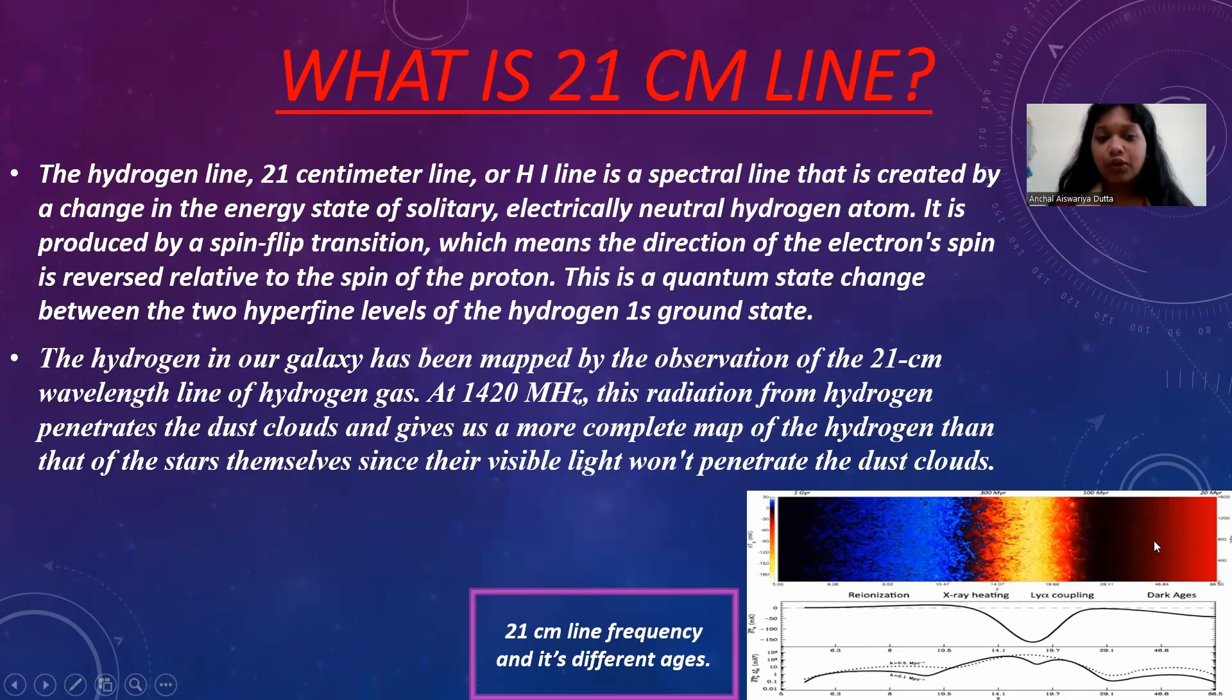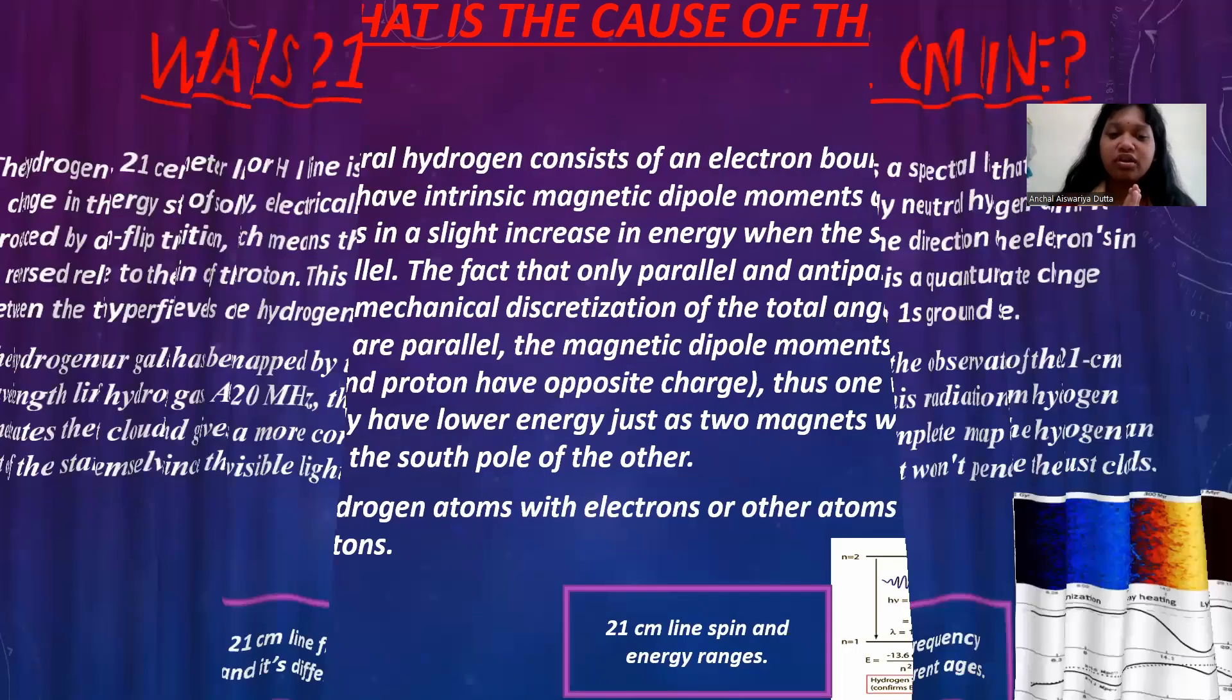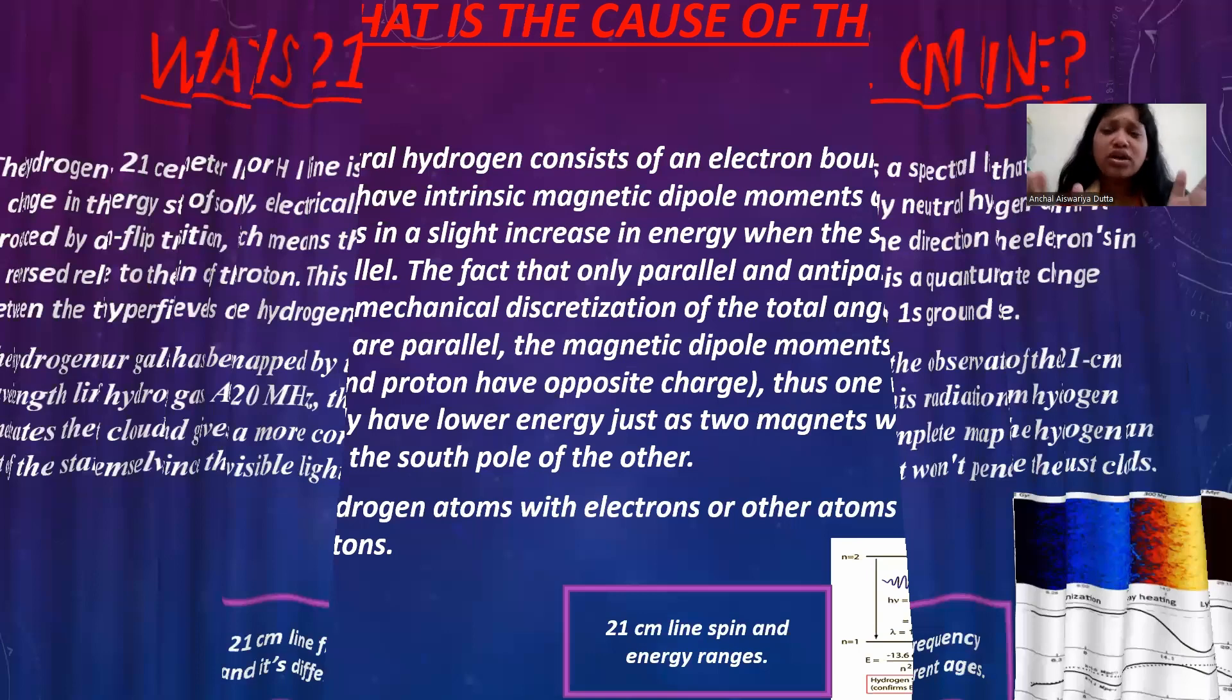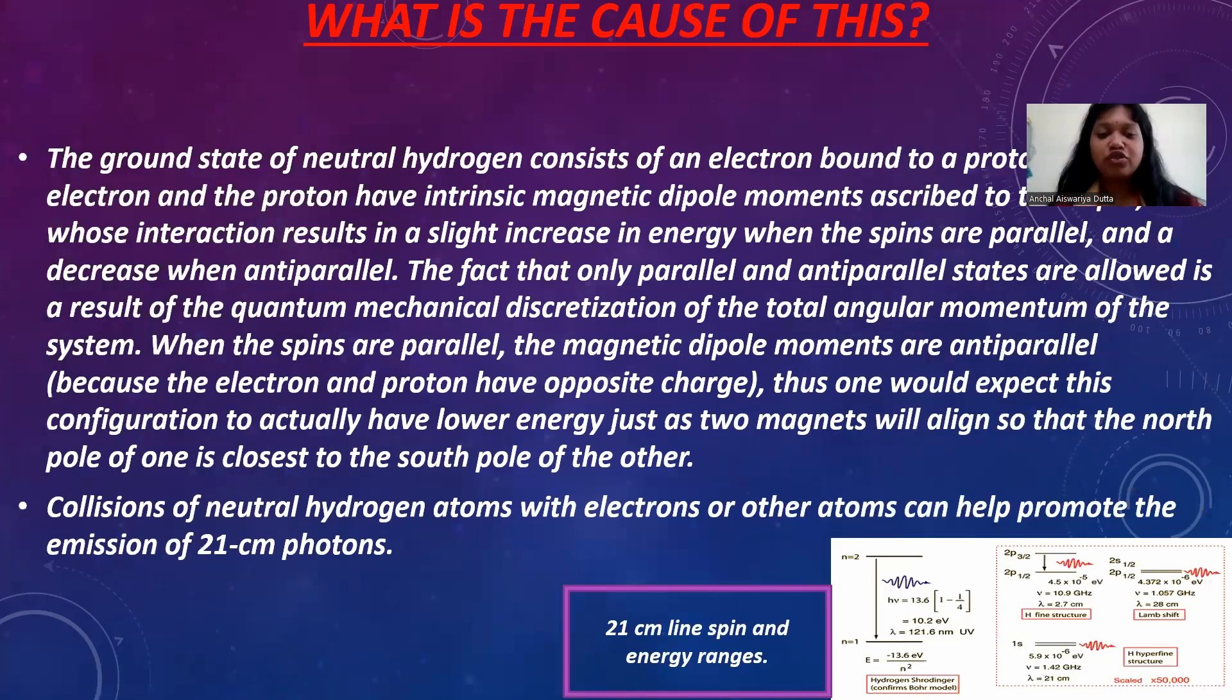Now, again, another important question will come to your mind: what is the cause of it? Well, it actually arises from a quantum mechanical phenomena involving the spin of an electron in a hydrogen atom. In a hydrogen atom, the electron orbits the proton in its nucleus and it has the property called spin, which is akin to a tiny magnetic moment.